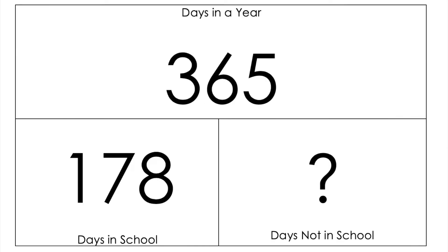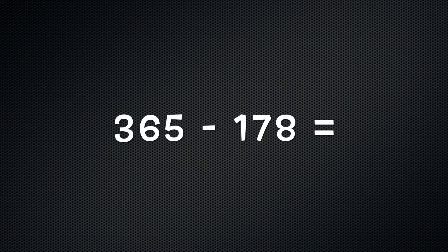Unlike the other problems we've done this week, which have been comparison problems, this one is a part-to-part whole. We know how many days are in a year and how many days those students were in school, but we are looking for the missing part of how many days they were not in school. To solve for that missing part, we can do 365 minus 178 to equal the unknown.